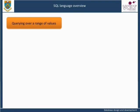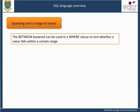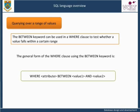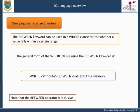Querying over a range of values. The BETWEEN keyword can be used in a WHERE clause to test whether a value falls within a certain range. The general form is: WHERE attribute BETWEEN value1 AND value2. The operands value1 and value2 can either be literals, like 1000, or expressions referring to attributes. Note that the BETWEEN operator is inclusive.